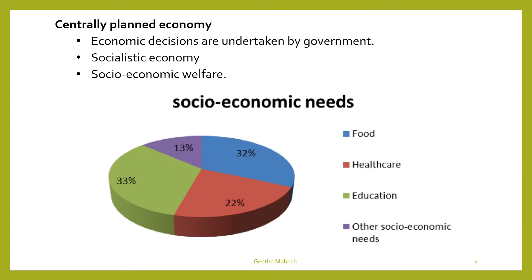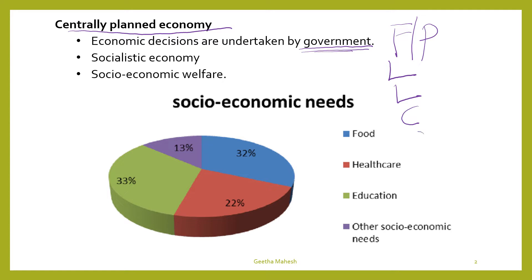The first one is centrally planned economy. In a centrally planned economy, all economic activities are owned and controlled by government. It means all factors of production — land, labor, capital, and organization — are under the control of government. So here government is going to take all economic decisions. This centrally planned economy is also called as socialistic economy. In this economy they always focus on maximization of socio-economic welfare.